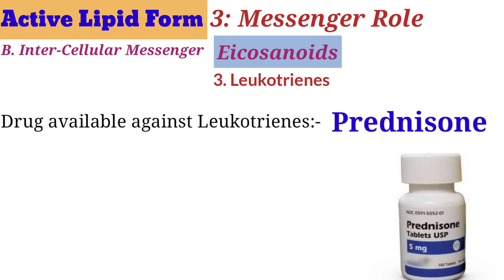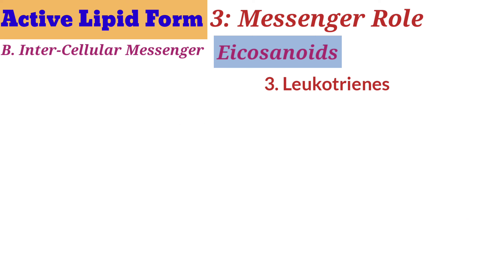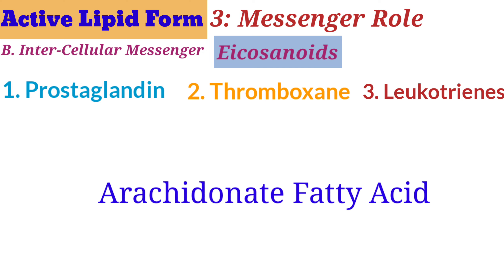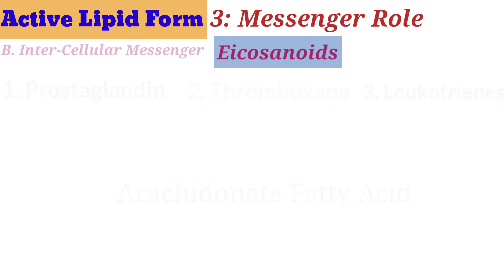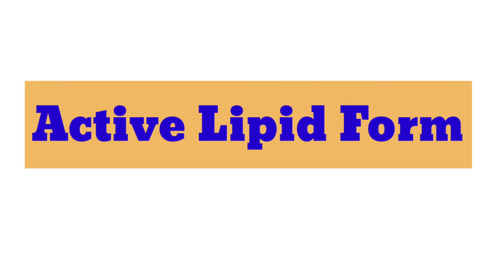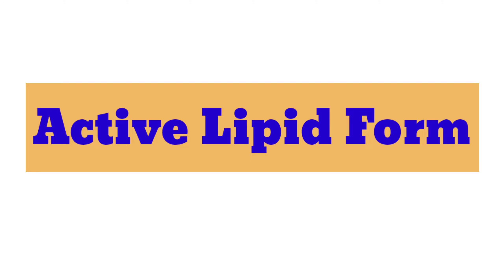To summarize, I have explained three different groups that come under eicosanoids: prostaglandins, thromboxanes, and leukotrienes — all derived from arachidonic acid. With this, I conclude the discussion on the active form of lipids. Previously we discussed the passive forms, and today we have discussed the active forms of lipids.